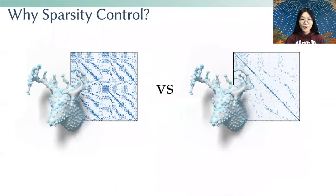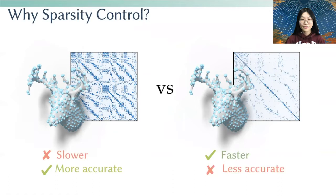So why is sparsity control so important? On the one hand, a sparser matrix means less computation cost and is therefore faster. On the other hand, a denser matrix has more degrees of freedom and may better preserve the spectral properties. Our sparsity control allows for a trade-off between the spectral accuracy of the operator and the cost of its application.